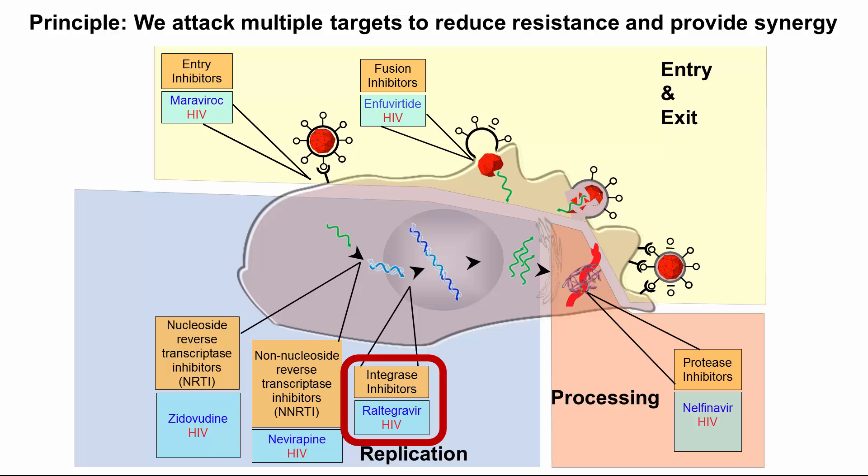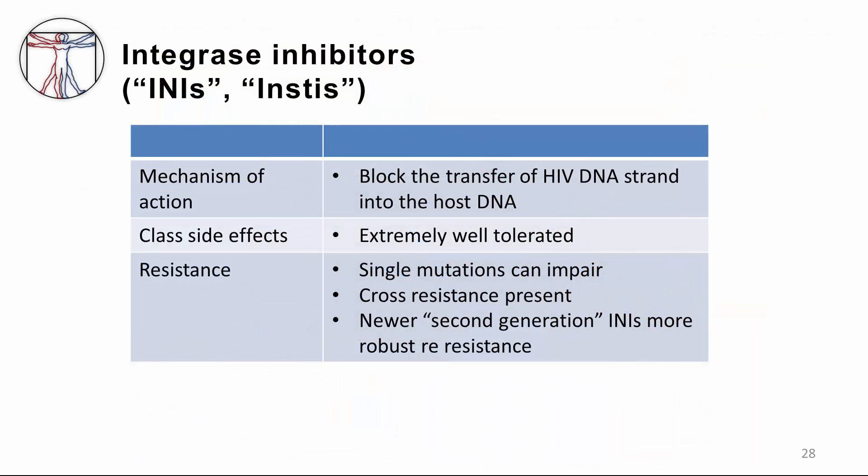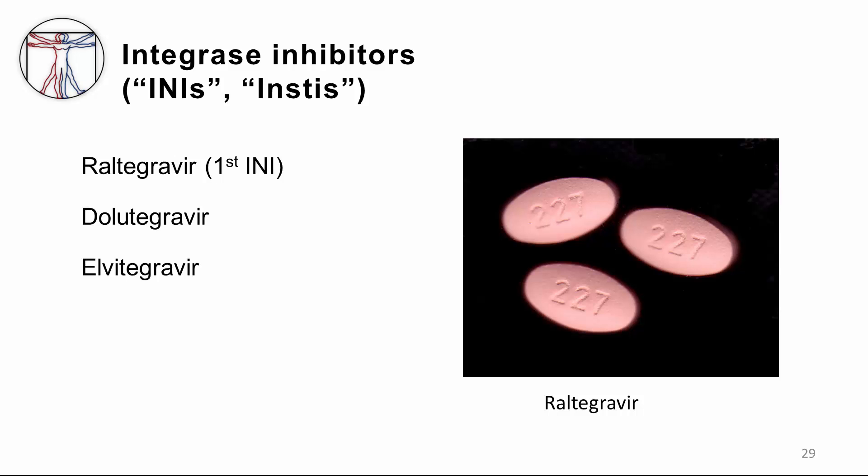Let's next talk about the integrase inhibitors, also known as integrase strand transfer inhibitors, or INSTIs, or INIs. They work by blocking the transfer of HIV DNA strands into the host DNA. They're extremely well-tolerated with very few drug interactions. Resistance can still occur by single mutations, and there could be some cross-resistance across the class. Newer generation INIs are more robust regarding resistance. Raltegravir was the first integrase inhibitor, and later agents include dolutegravir and elvitegravir.